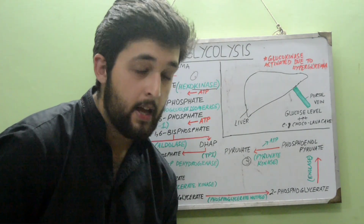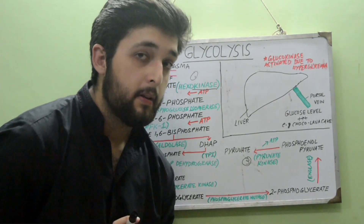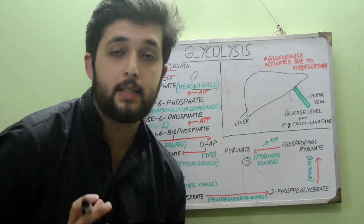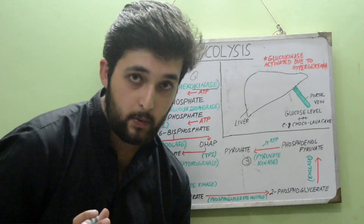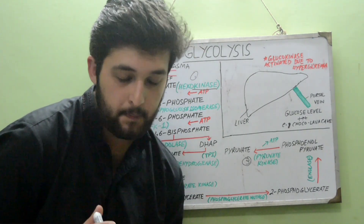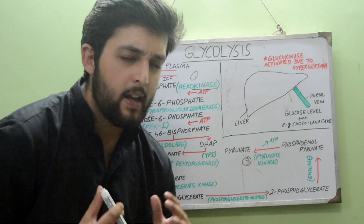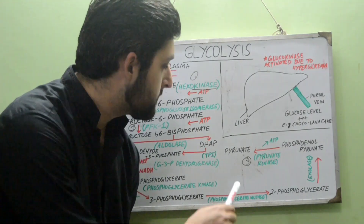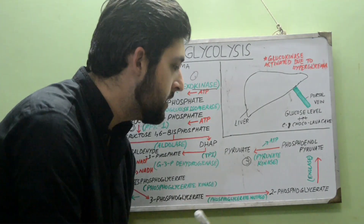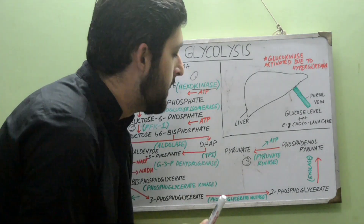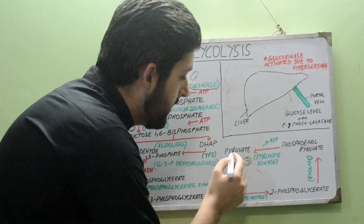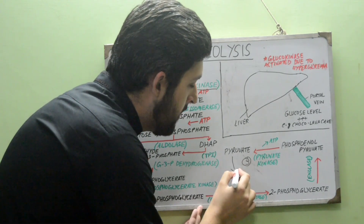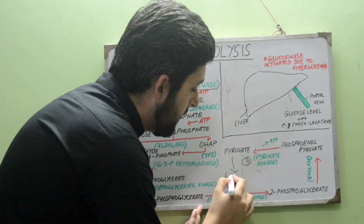This completes glycolysis. Under aerobic conditions — where there is an adequate supply of oxygen — pyruvate proceeds to the next stages of metabolism. Under anaerobic conditions, however, pyruvate is converted to lactate.